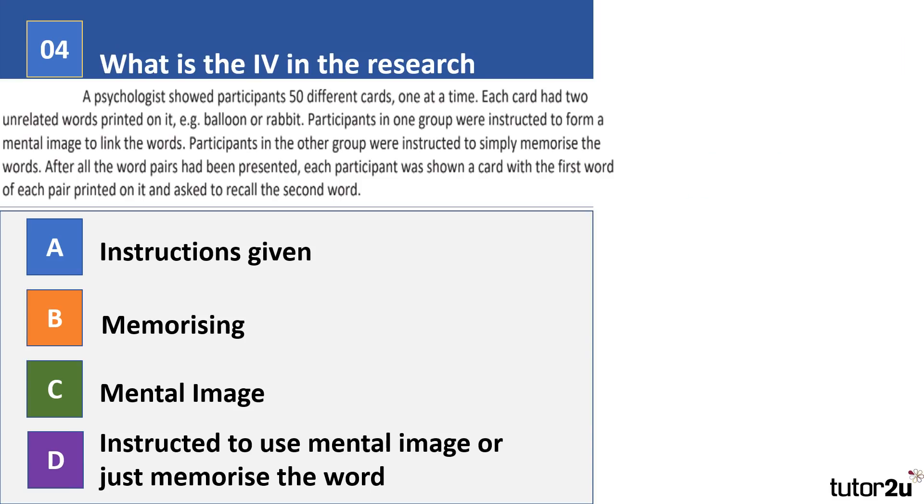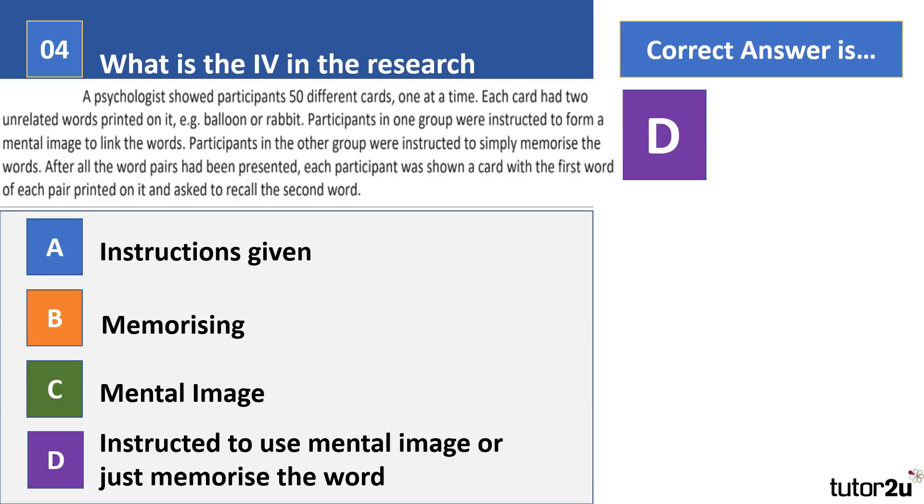Question four: What is the IV in the research below? Take your time, have a read through what you've been given there, and I want you to pick out what the independent variable is and then pause the video. Right, correct answer there is D. Now A, B, and C are all answers that we might expect to see from students.